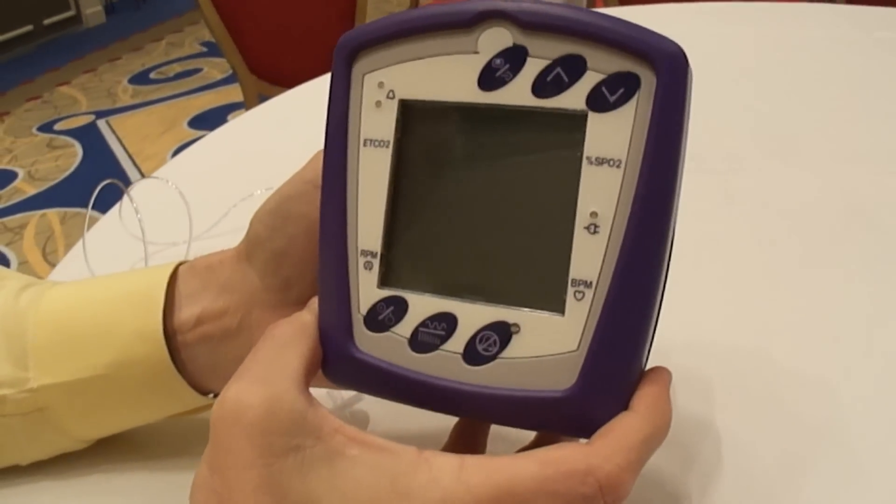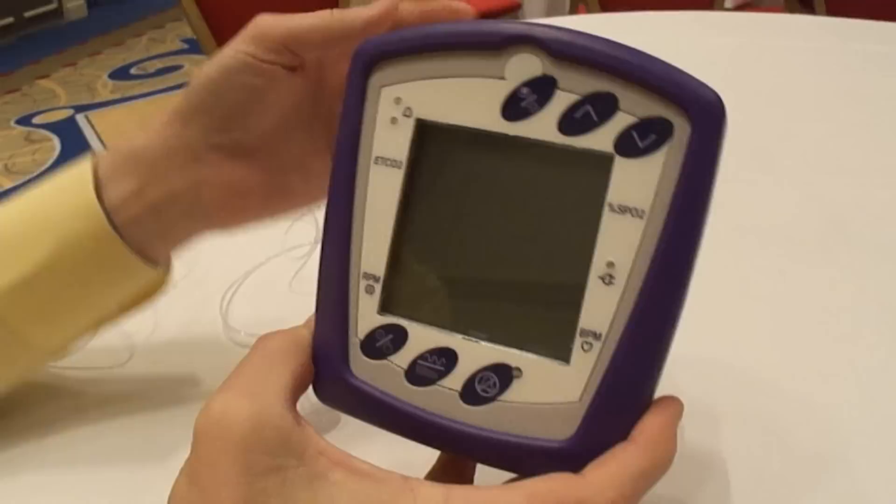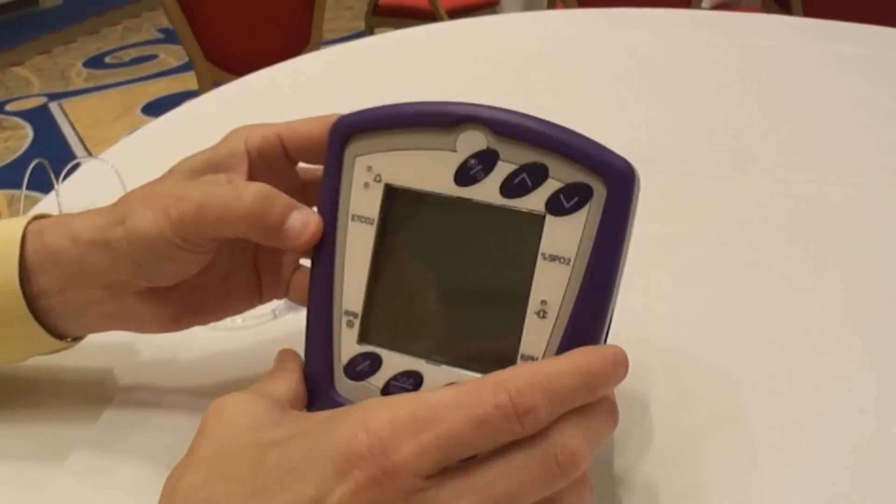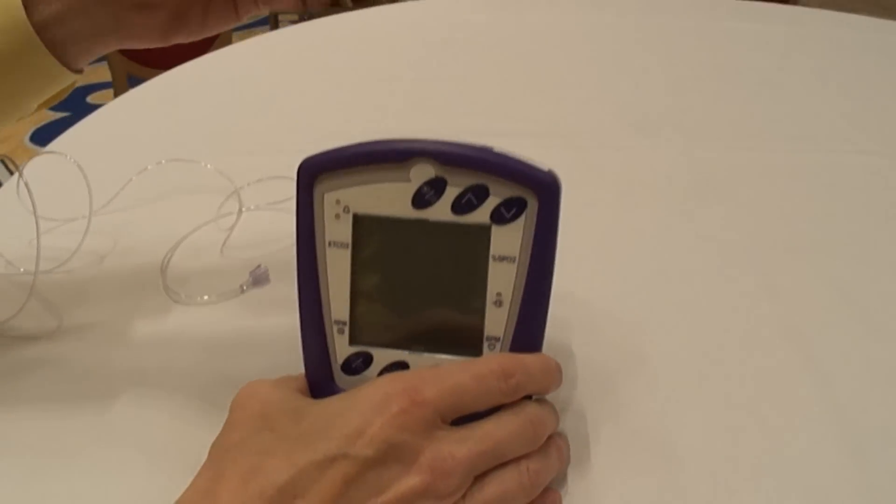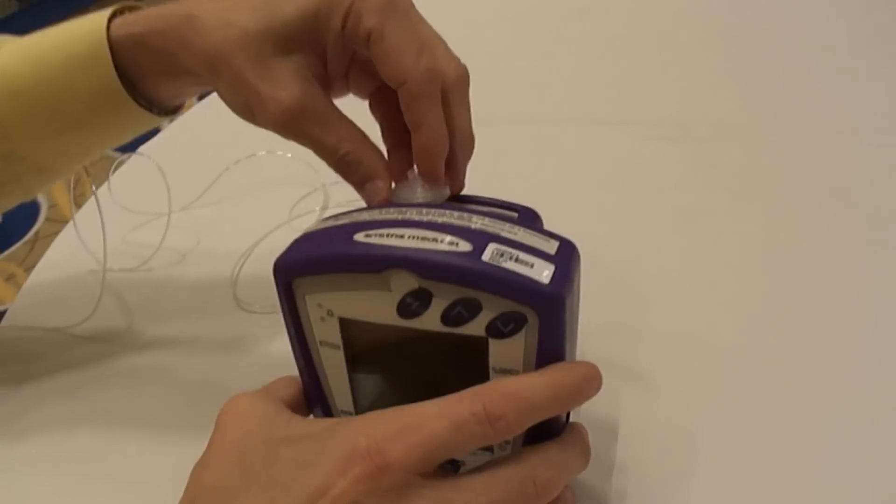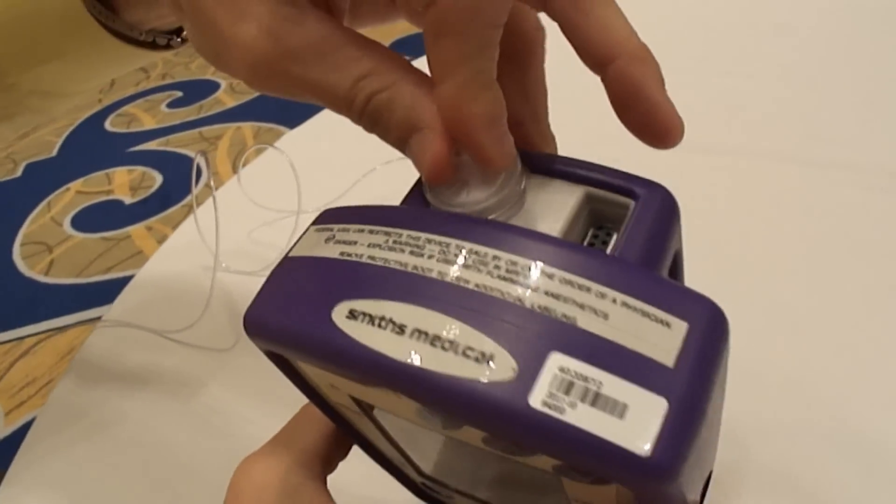You also get with it a battery and a battery charger. The way the unit works is it's for monitoring end-tidal CO2 and respirations per minute. First thing you have is a gas manifold that goes right here on the back. As you can see, it just slips in.